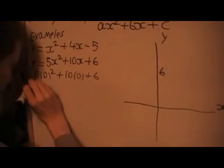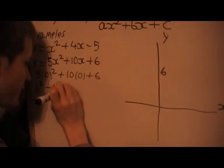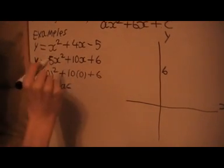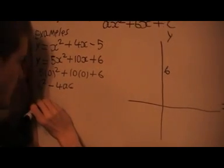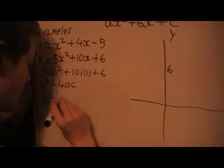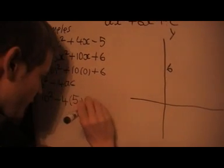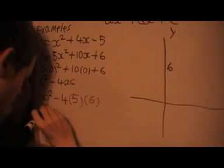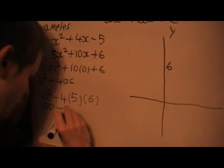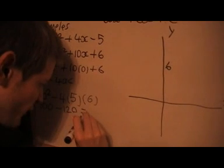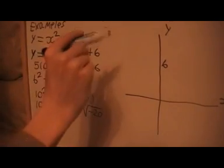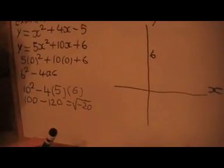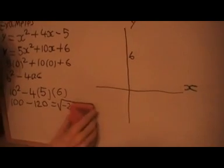Now when we look for the solutions, remember the discriminant b² minus 4ac. We'll end up with a bit of a problem. We'll get 10 squared minus 4 times 5 times 6. And that turns out to be 100 minus 120, which would be finding the square root of minus 20. Which means the graph is completely above the x-axis. So we don't have solutions in this case.